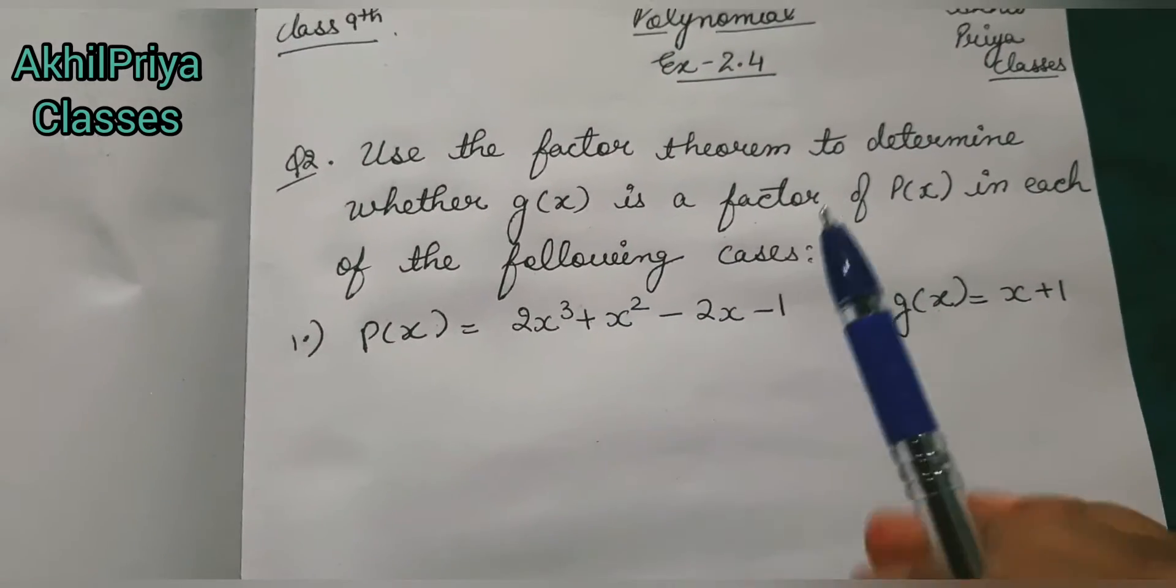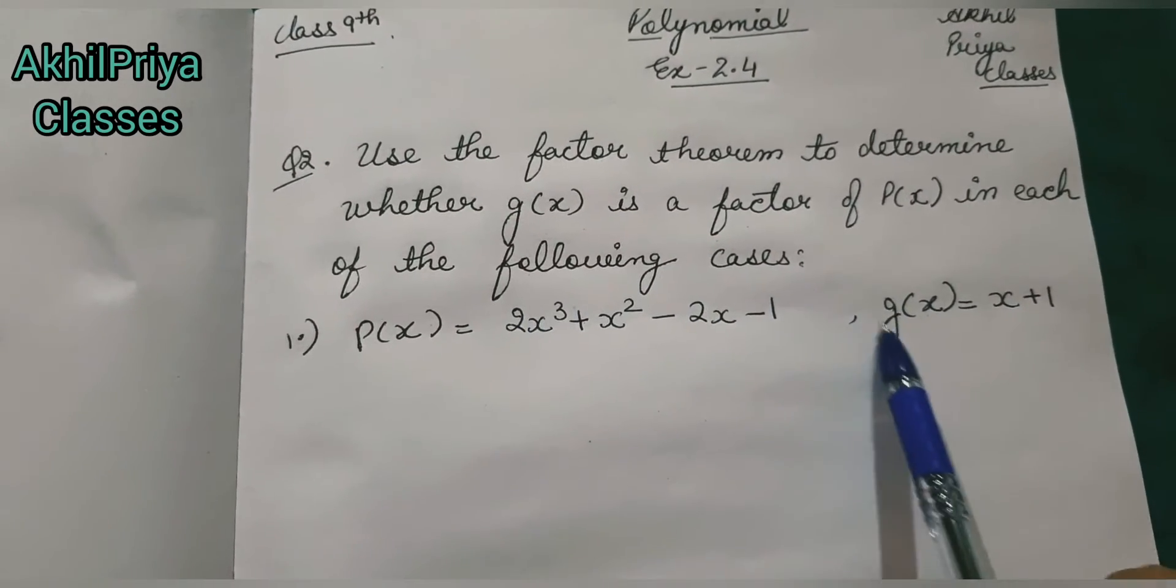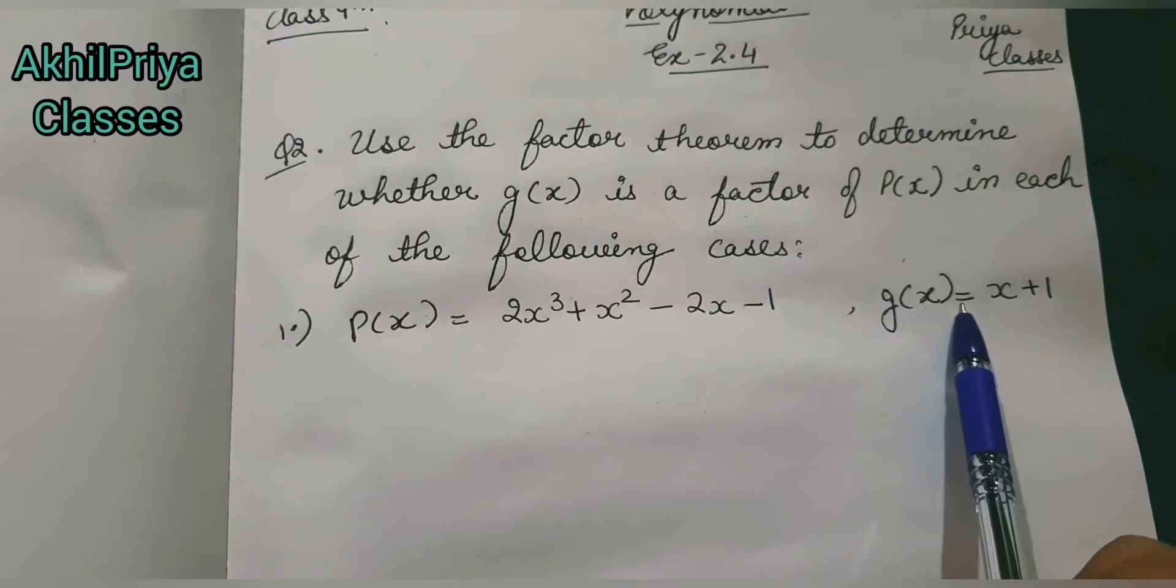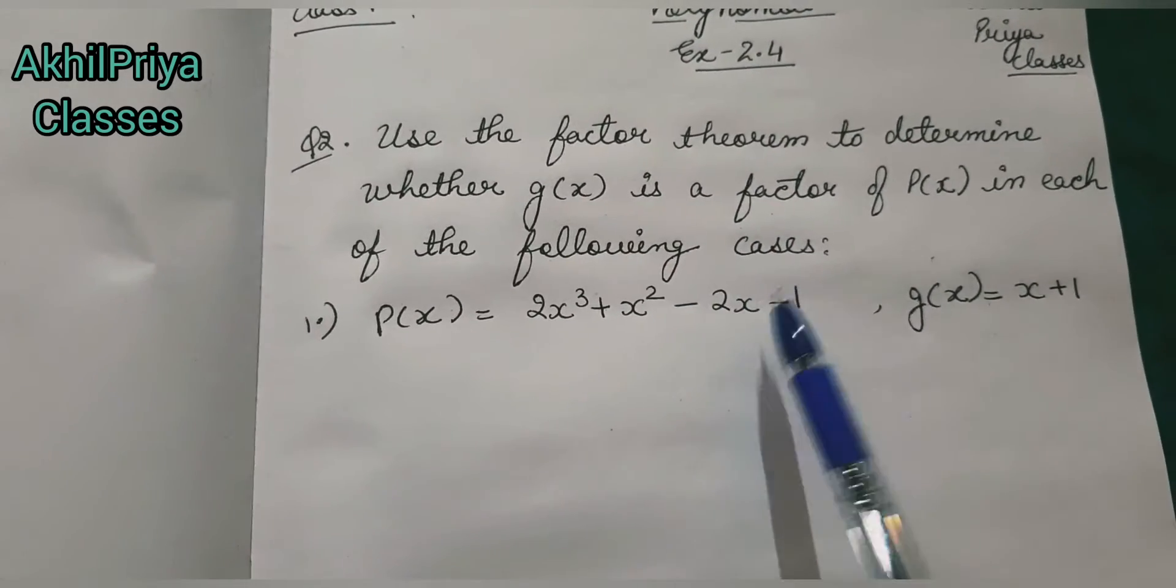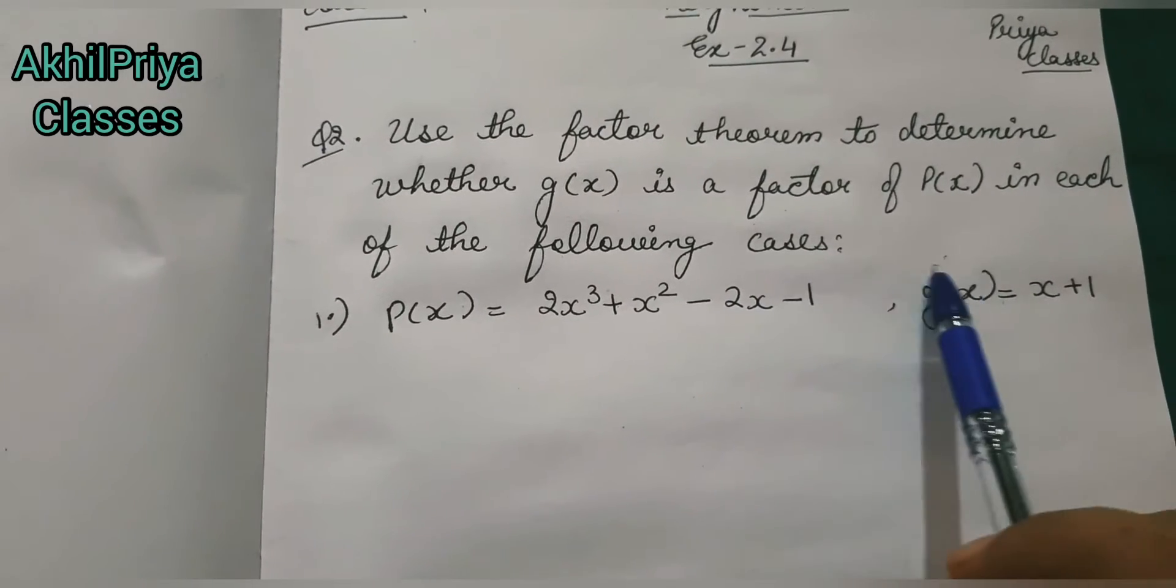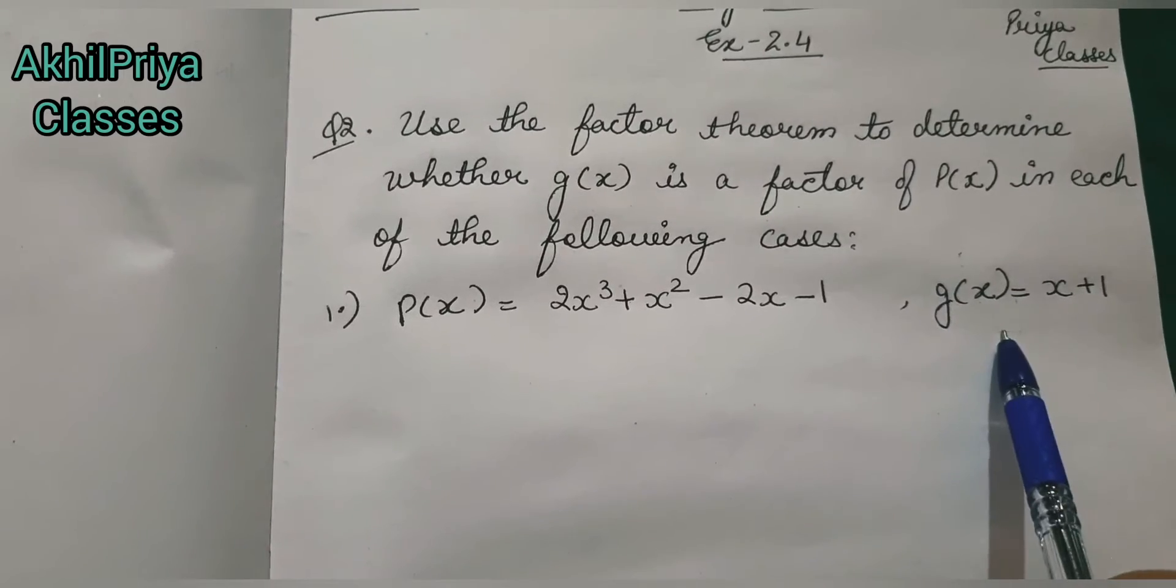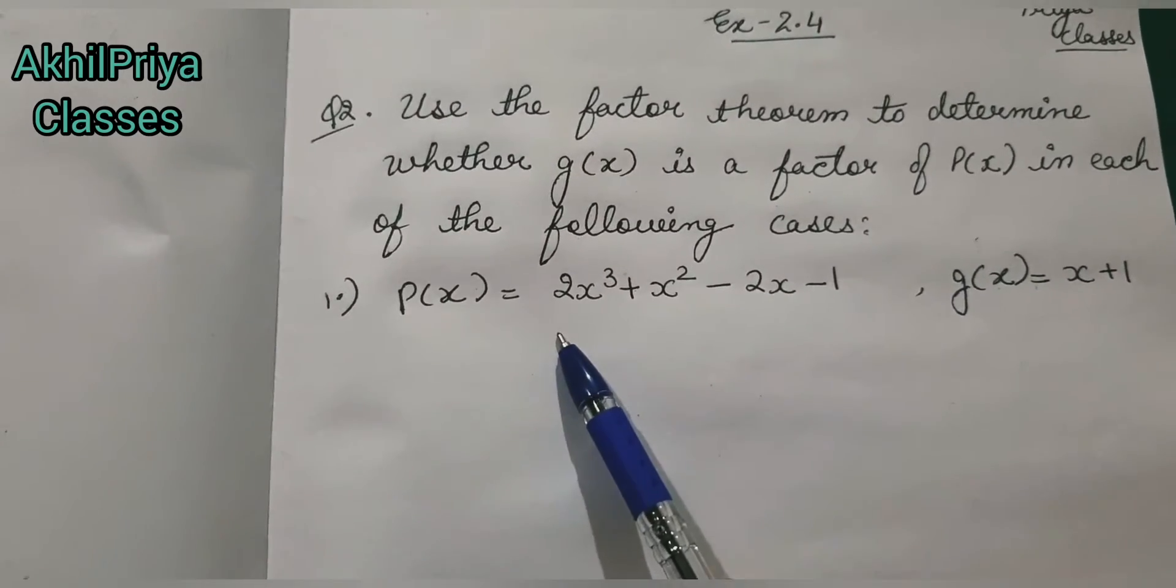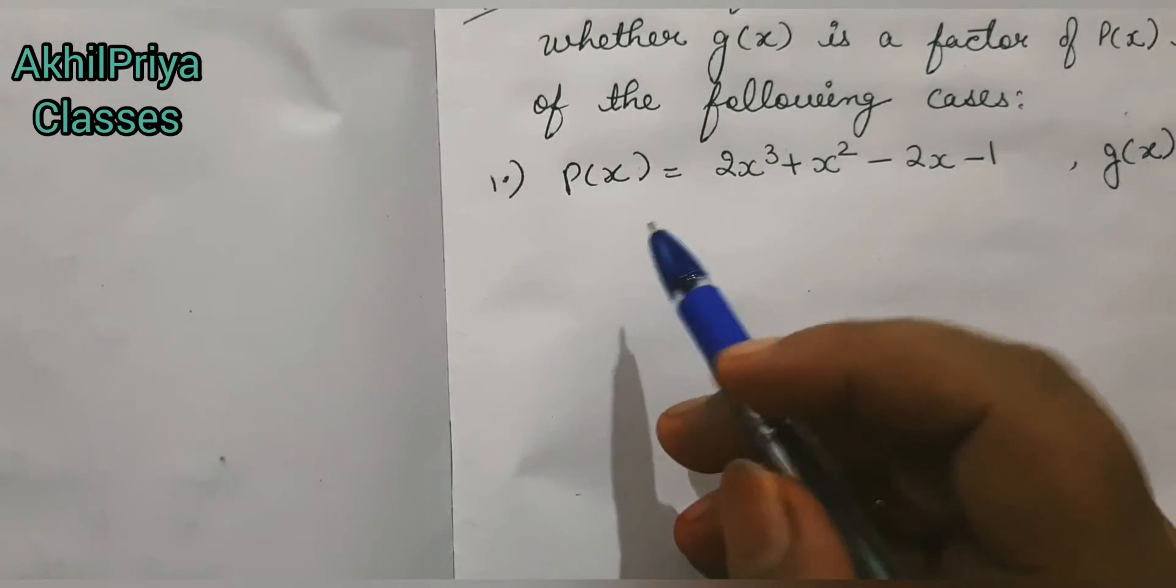So one by one, we need to check for the value of p(x) whether the given g(x) is a factor of p(x) or not. First of all, to check this, we need to find the zero of the polynomial g(x) and put that value in p(x). Okay, so let's start.